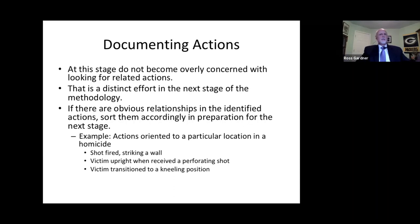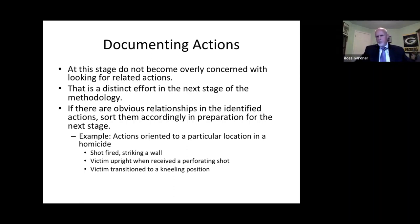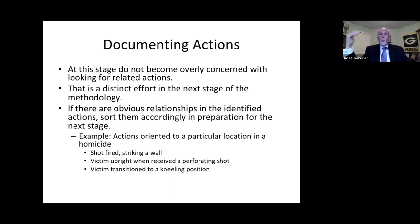Actions are going to come to us completely randomly — they don't show up in order, and that's fine. Don't try to put related actions together right up front; that's the next stage. If there are obvious relationships — the shot was fired striking a wall, the victim was upright and received a perforating shot, and the victim transitioned to a kneeling position — and you can make those three statements, sure, put them together. But don't get too worried about making relationships yet. Right now we're just looking through the data saying: what, if anything, can I make statements about? What's going on, what's changing?